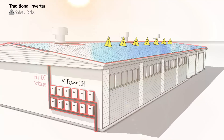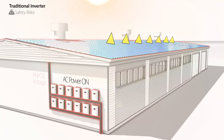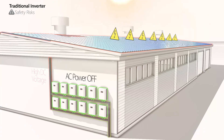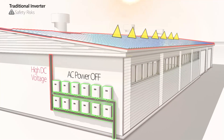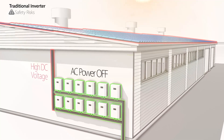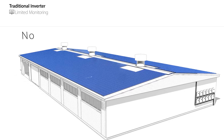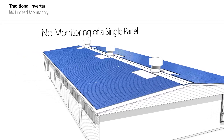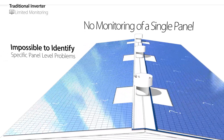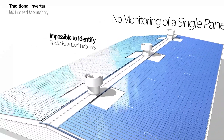A third drawback is safety issues. The DC cables that connect the panels to a string carry high voltage as long as the sun is shining. The traditional inverter cannot shut down the DC voltage of the panels, and therefore there are serious associated risks for installers and firefighters. And lastly, a traditional system cannot track power output, temperature, or any other parameter of a single panel, making it impossible to identify specific panel-level problems remotely.